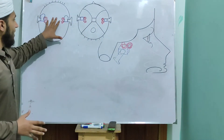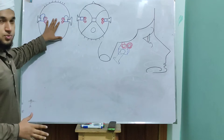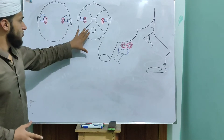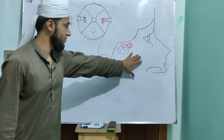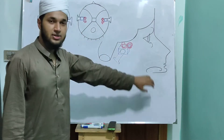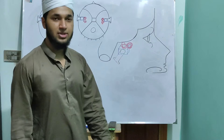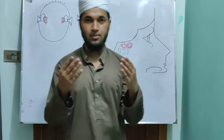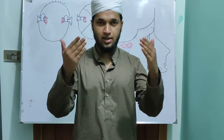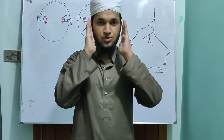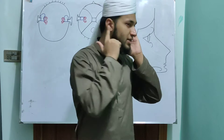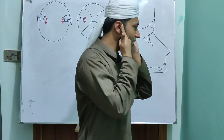This is the anterior view. This is the superior view. This is the lateral view. What does the anterior view mean? If we are looking at the anterior direction, we are located at this level.